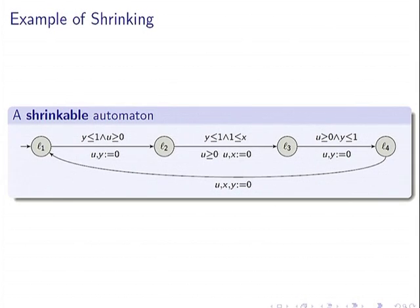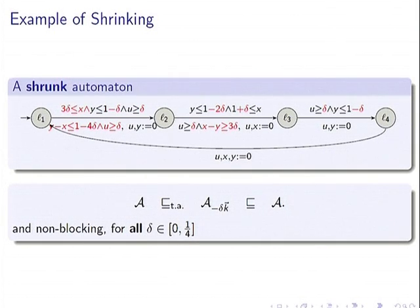To show how a shrunk automaton looks: if you apply the algorithm to this example automaton, it says it is shrinkable and gives the red shrinking parameters. You see that one becomes one minus delta, and we have two delta, three delta, four delta — we really need to consider different parameters for each atomic clock constraint. Both properties — non-blocking and simulation equivalence — hold for all delta between zero and one-fourth.